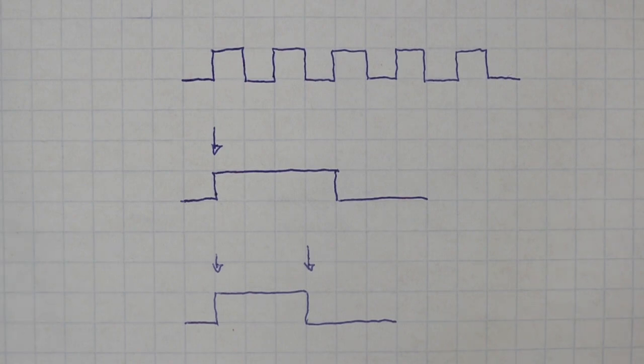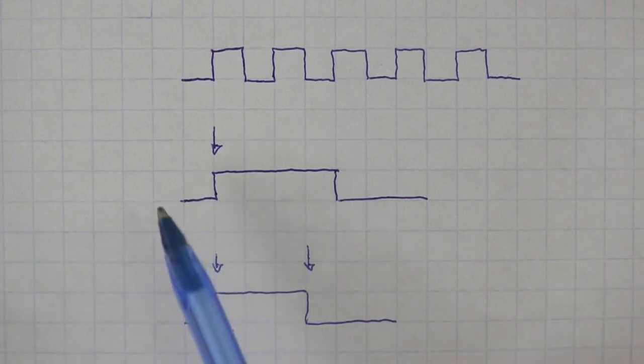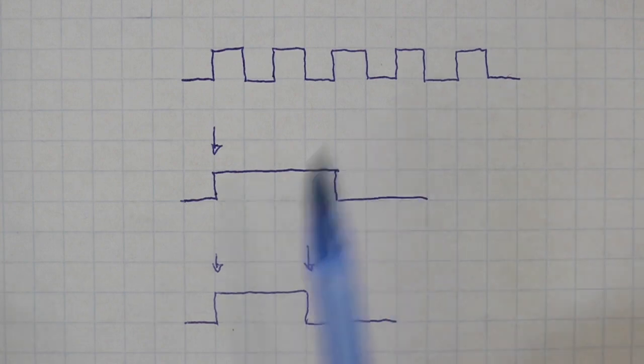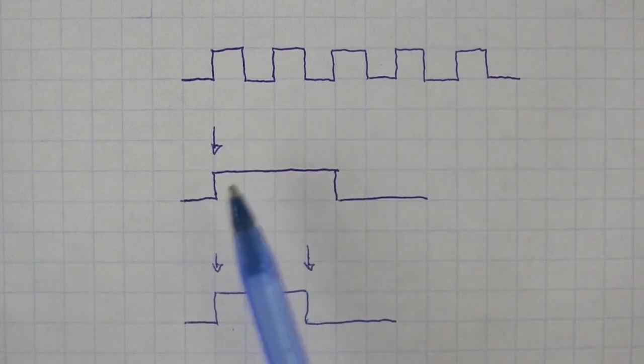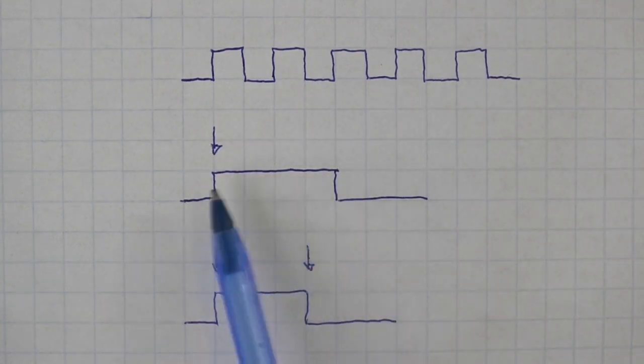The second mode, which is what we will see in this video, is the monostable mode. The circuit produces a single pulse when a signal is applied. We can control the duration of the pulse.